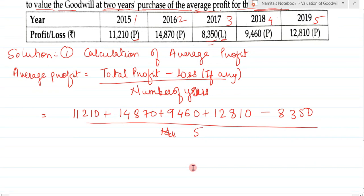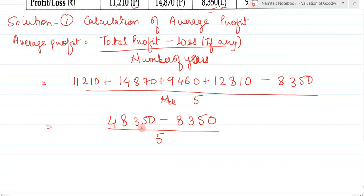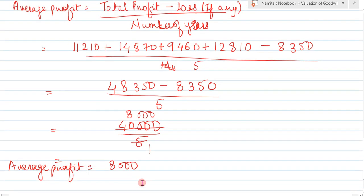Now add all the profits: 11,210 plus 14,870 plus 9,460 plus 12,810 gives a total profit of 48,350. Minus the loss of 8,350 gives 40,000, divided by 5. So the average profit is equal to 8,050.